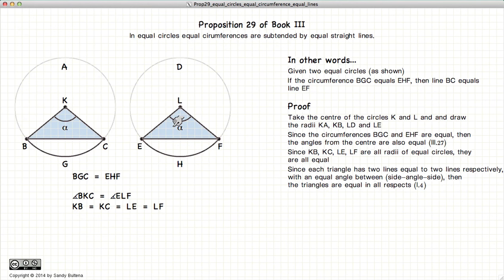According to Proposition 4 of Book 1, that means these triangles are equal in all respects. In other words, BC is equal to EF.